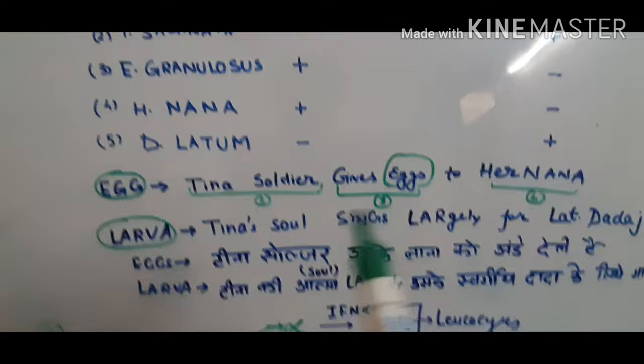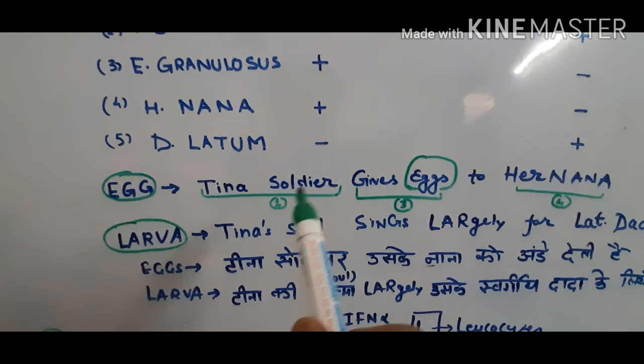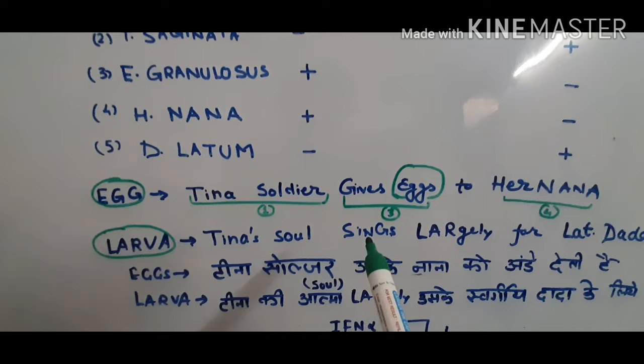Now comes the larva stage. Larva is the infective stage in Taenia solium, Taenia saginata, and D. Latum. How do we remember this? With another mnemonic.